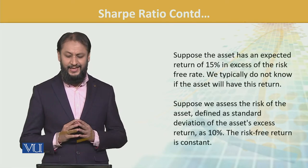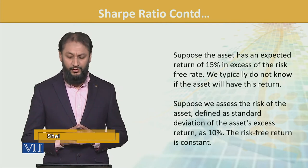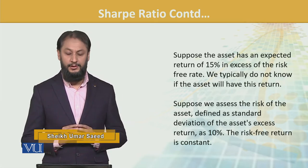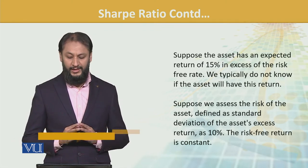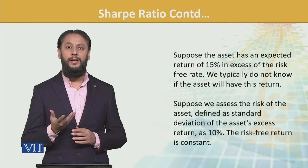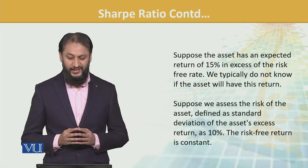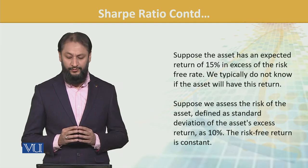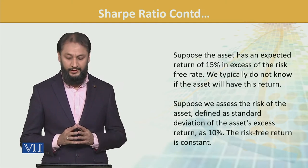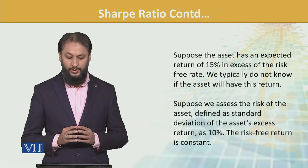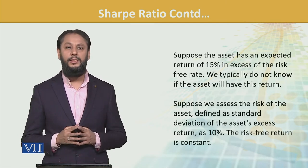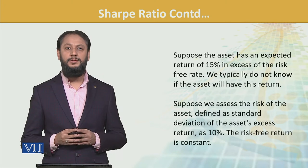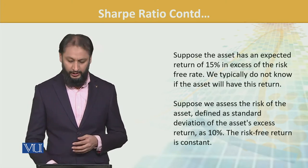Suppose that an asset has an expected return of 15% in excess of the risk-free return. We typically don't know if the asset will have this return, but for illustrative purposes, suppose we assess that the risk of the asset defined as standard deviation of the excess return is 10%. Risk-free return is constant, so we have the excess return and the standard deviation. Once this part is done, we should easily calculate the Sharpe ratio.